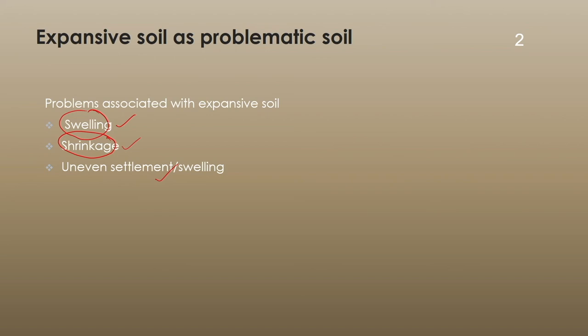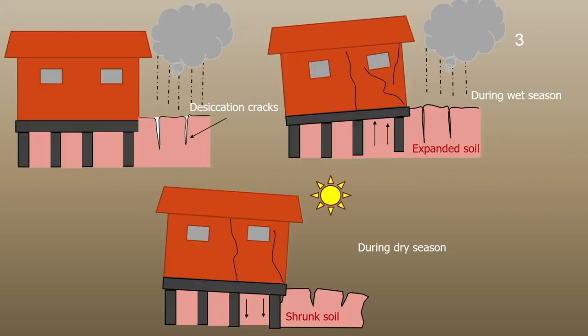The different problems associated with expansive soils are swelling, shrinkage, and uneven settlement and swelling. We know that 17 percent of the Indian land mass is occupied by expansive soil, and the damage caused is quite large. In an estimate, the total damage caused because of expansive soil is far more than the total damage caused due to earthquake, tsunami, flood, or hurricane combined together. So we can understand how big the problem is.